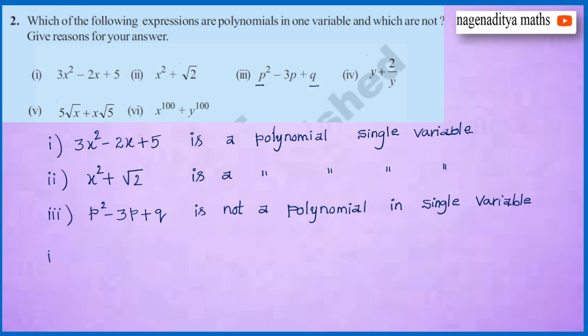The fourth one is y plus 2 by y. This can be written as y plus 2 times y power minus 1. Since the exponent is negative, this is not a polynomial.